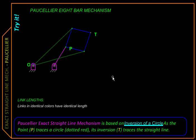Here we will be looking at a mechanism which is capable of tracing a mathematically accurate straight line. It was designed by Paucellier and it is essentially an 8-bar mechanism.